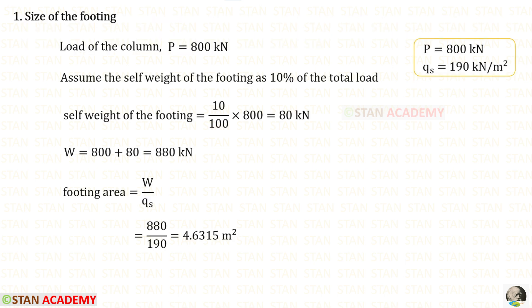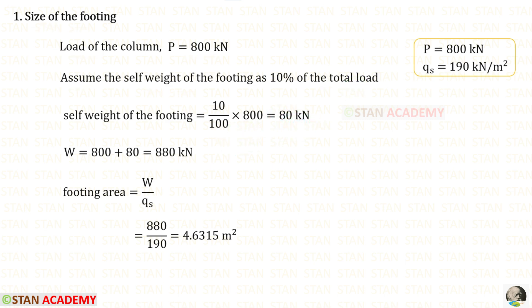The first step in the design is to find the size of the footing. The load of the column is given as 800 kilonewton. Let us assume the self-weight of the footing as 10 percent of the total load, so we get 80 kilonewton. Adding the column load and self-weight gives a total load of 880 kilonewton. The footing area equals W divided by QS, giving an area of 4.6315 meter square.